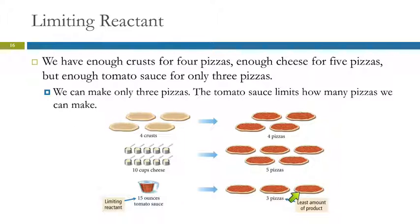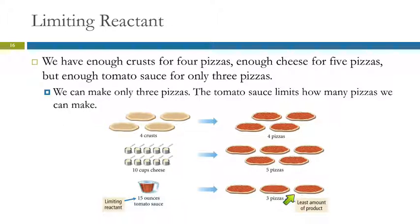But that's what students sometimes do with these limiting reactant problems — they'll do these calculations and then add the numbers together. If you think about that with pizzas, it doesn't make any sense. But when we're talking about chemicals, a lot of students don't even know what makes sense, and so they just start doing things. Try to think about it and understand what's going on — think about pizza.